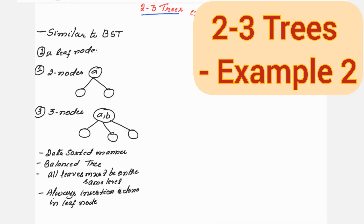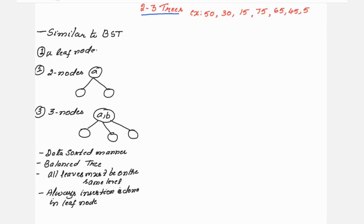Welcome to this video lecture series on analysis and design of algorithms. In this session I shall continue from the previous one, where I explained in detail about two-to-three trees. One more example I shall explain here. The question is: construct a two-to-three tree by inserting the elements 50, 30, 15, 75, 65, 45, and 5.